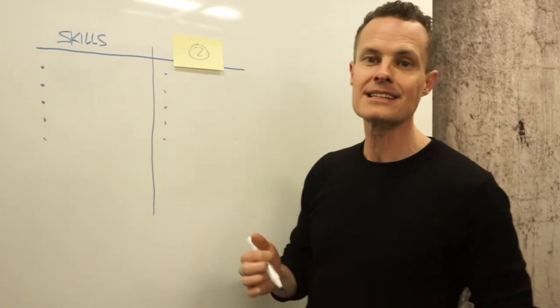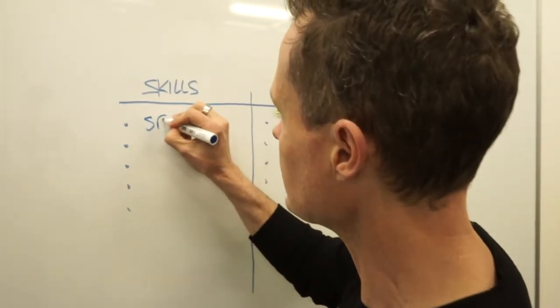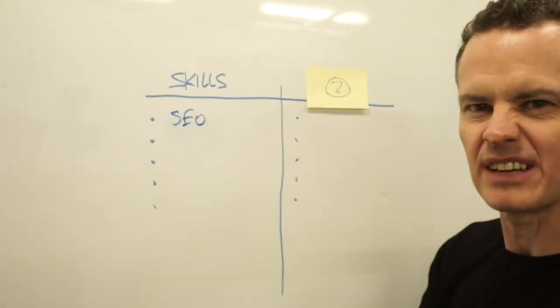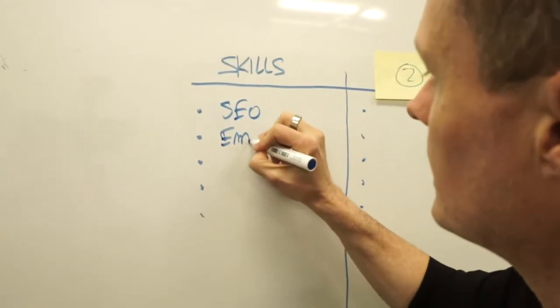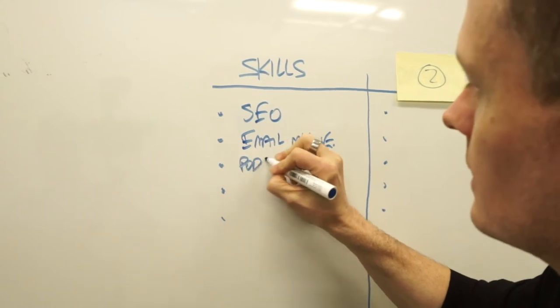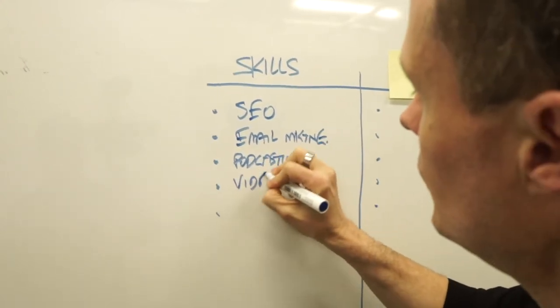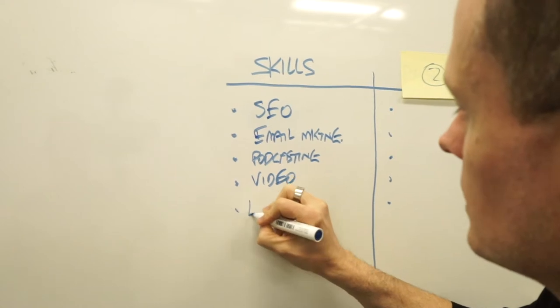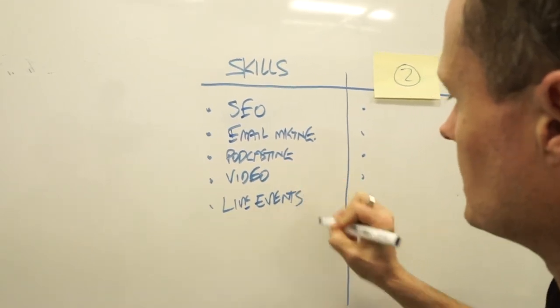So for me, I'm going to write down SEO because I happen to be really good at it, even though I don't really like doing it. I'm going to write down email marketing because I'm kind of good at that. I'm also going to write down podcasting, video, and live events because I've happened to become pretty good at that over the last few years as well.